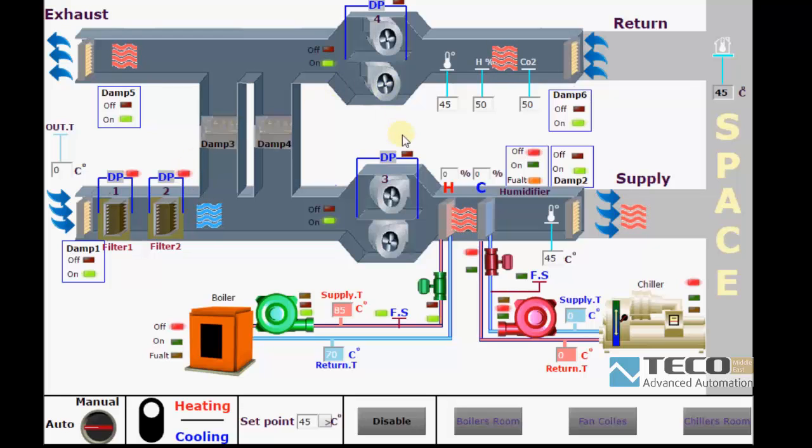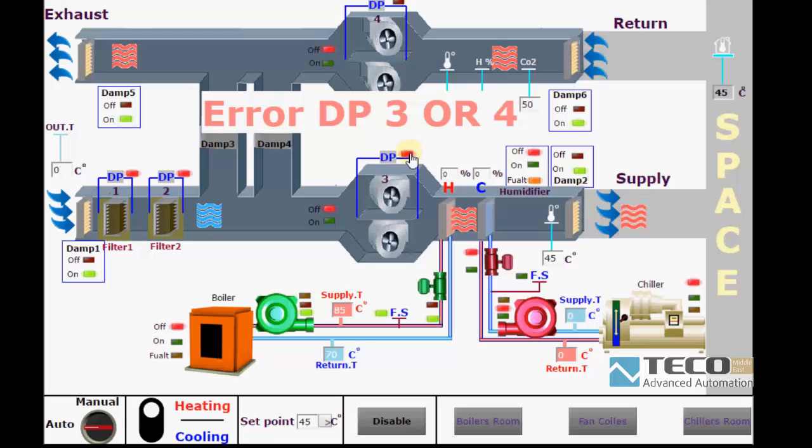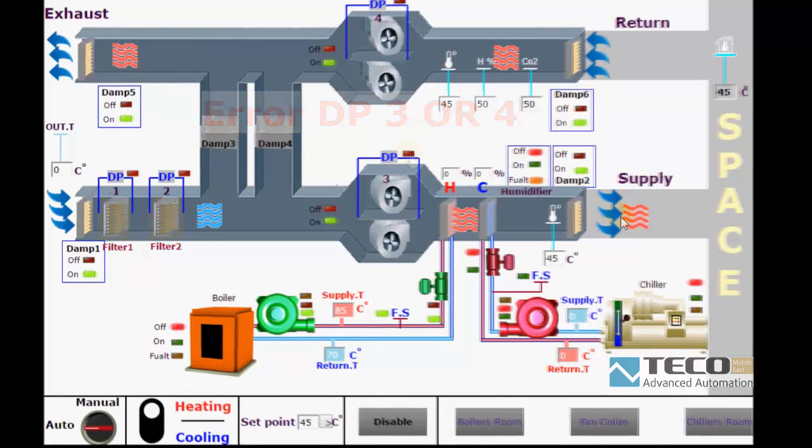Now for the fan, if we have a problem with the differential pressure sensor, all fans will turn off and an error will show on the screen. The operator will know about this and communicate with maintenance to solve the problem.